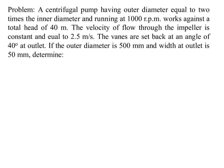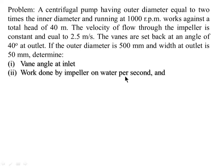The problem is: a centrifugal pump having outer diameter equal to 2 times the inner diameter, running at 1000 rpm, works against a total head of 40 meter. The velocity of flow through the impeller is constant and equal to 2.5 meter per second. The vanes are set back at an angle of 40 degree at outlet. If the outer diameter is 500 mm and width at outlet is 50 mm, determine vane angle at inlet, work done by impeller on water per second, and manometric efficiency.